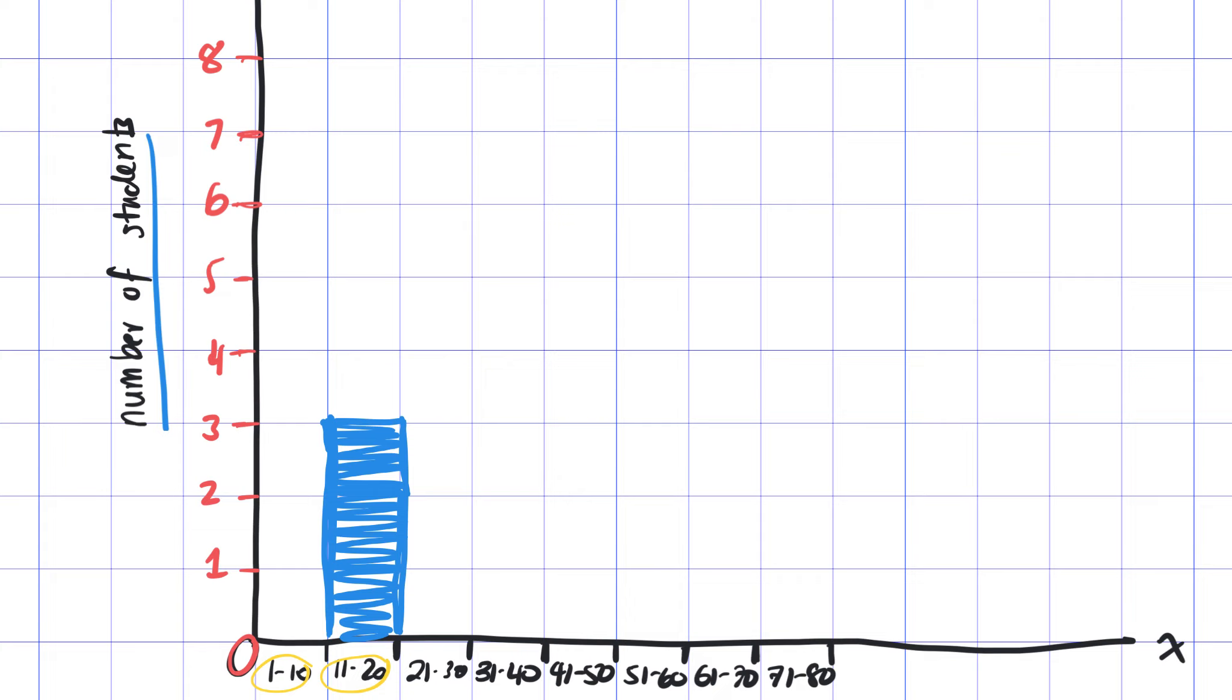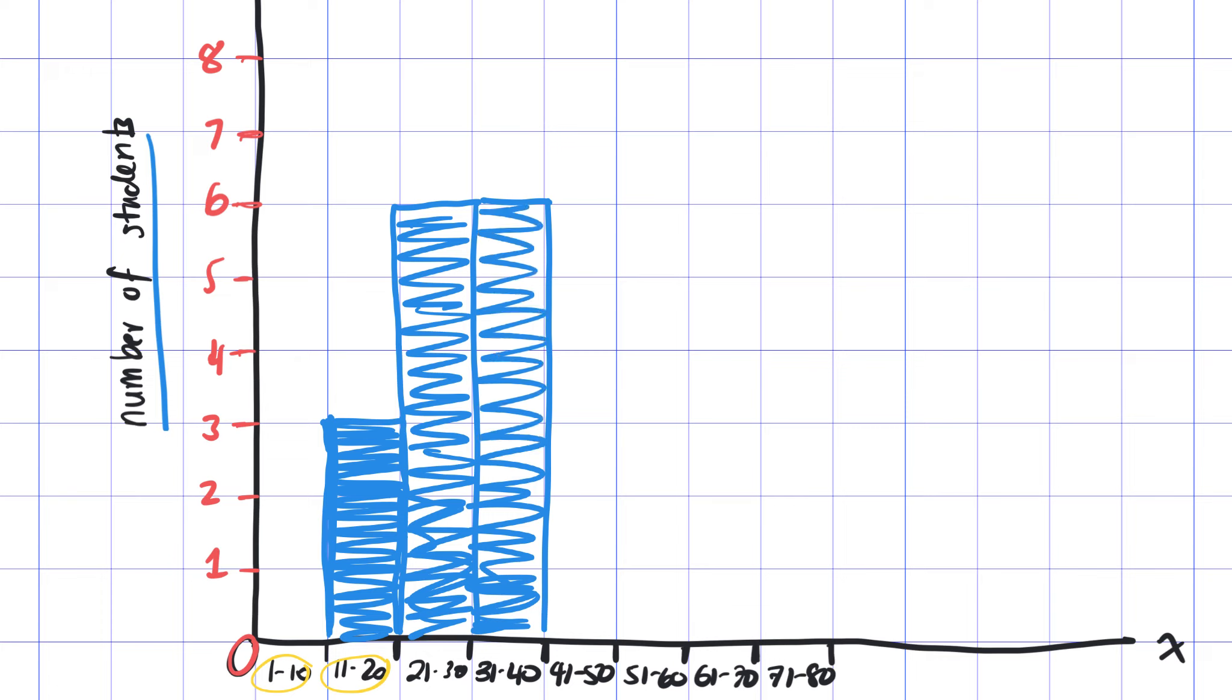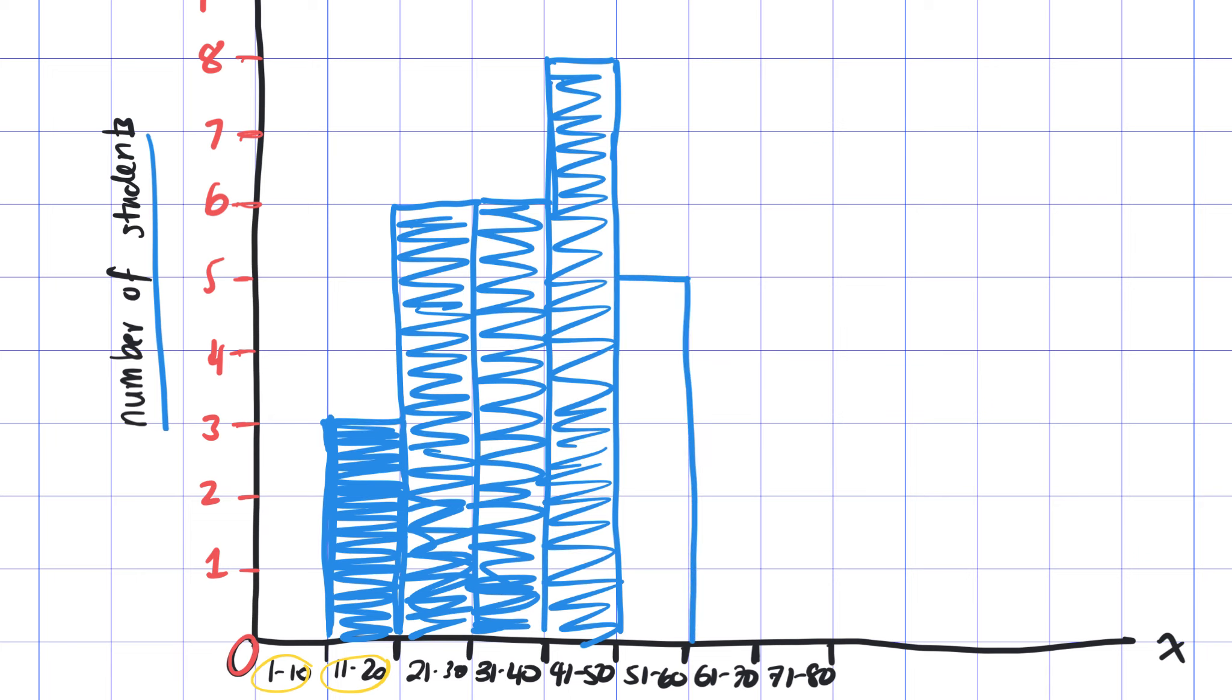So we're going to complete this graph for each set of intervals. I'm going to keep going back to my chart to fill the answers. 21 to 30 seconds is six. 31 to 40 seconds was six again. 41 to 50 students, eight. And that was our highest number. 51 to 60 seconds was five. 61 to 70, five again. And then 71 to 80 was three. And this is a good visual representation to show how the data is spread out.